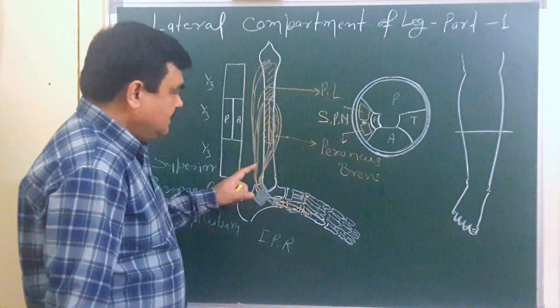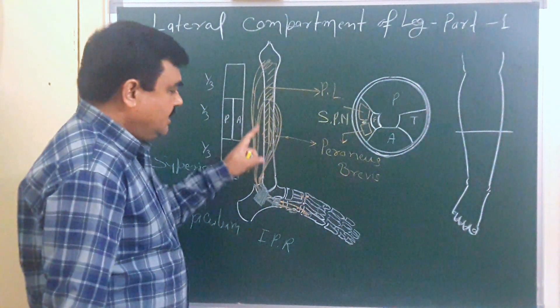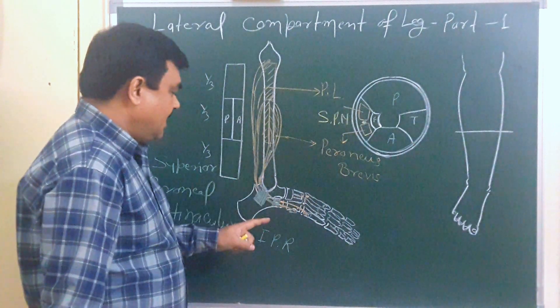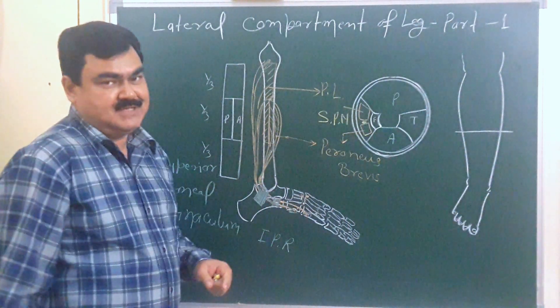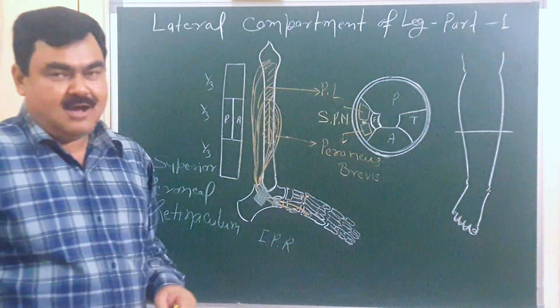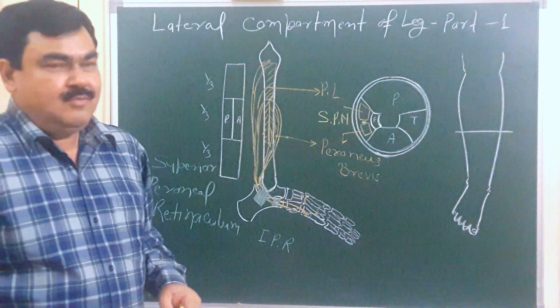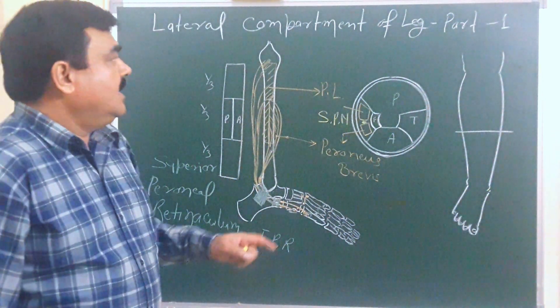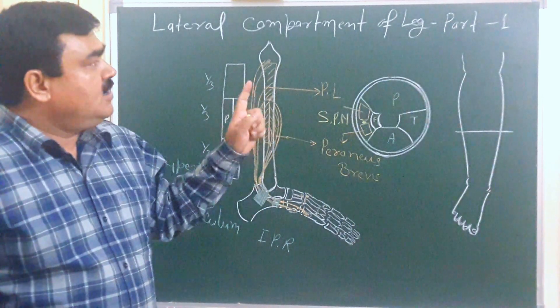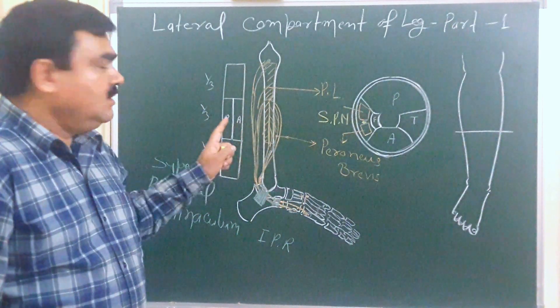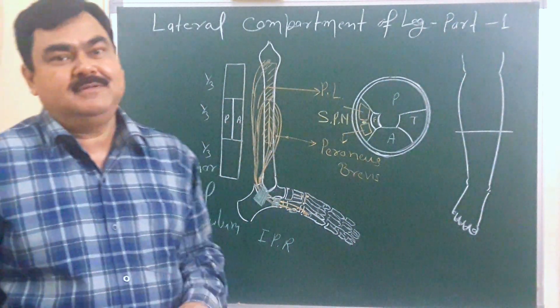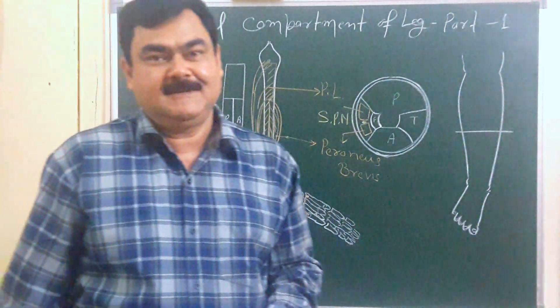Peroneus longus also forms a sling with the tibialis anterior muscle, which supports the arch of the foot. These are the two muscles of the lateral compartment — their origin, insertion, and action. We will discuss the nerve supply of these muscles in part two.